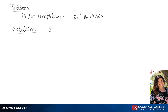We are going to factor 2x cubed minus 16x squared plus 32x. We can pull out a 2x from all of these terms, which will give us x squared minus 8x plus 16.